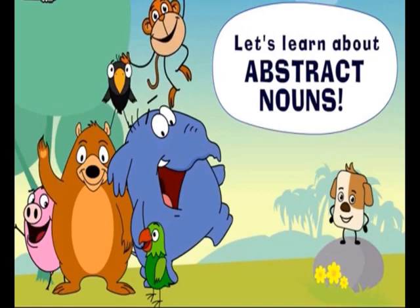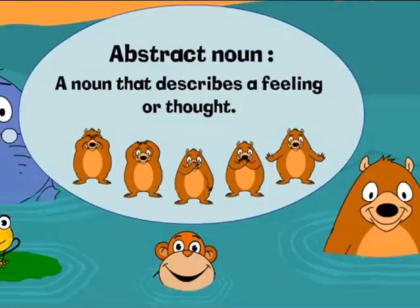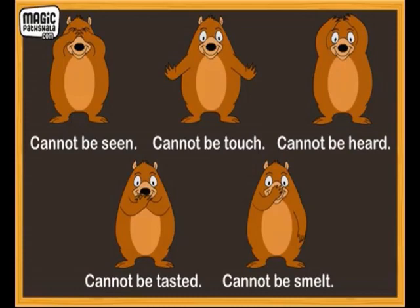Now let's learn about abstract nouns. Do you know what an abstract noun is? An abstract noun is a noun that describes a feeling or thought. Abstract nouns are names of things that are not concrete. They name things that we cannot see, hear, touch, taste, or smell. Abstract nouns are emotions or feelings that we can experience — we cannot see or touch them, but we can only feel them in our heart.